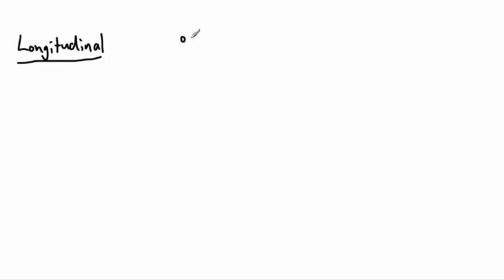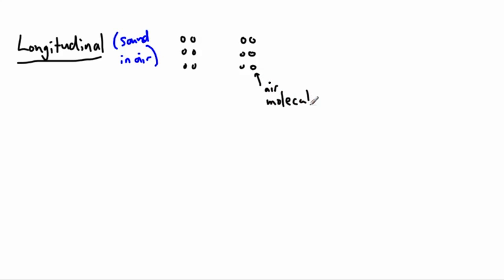What if I showed you something from longitudinal waves? We've done this before, but let's reiterate. Let's say this was sound in air. If we're looking at sound in air, we'd have these air molecules — that's what these black things represent. We have places where there's what's called compression, where there are more air molecules together, and we have areas called rarefaction.